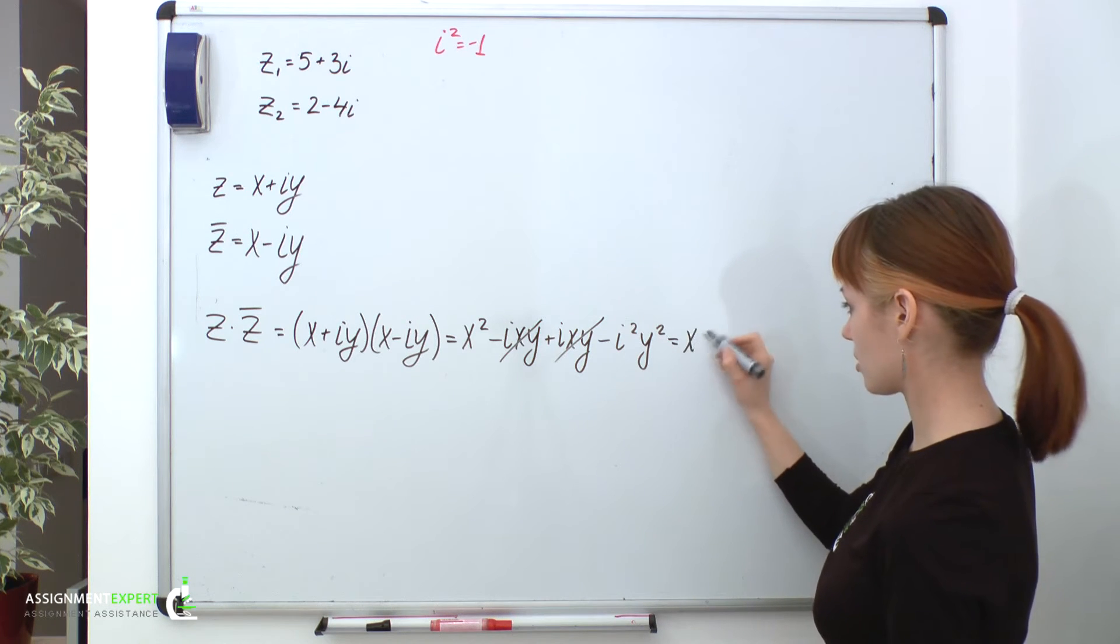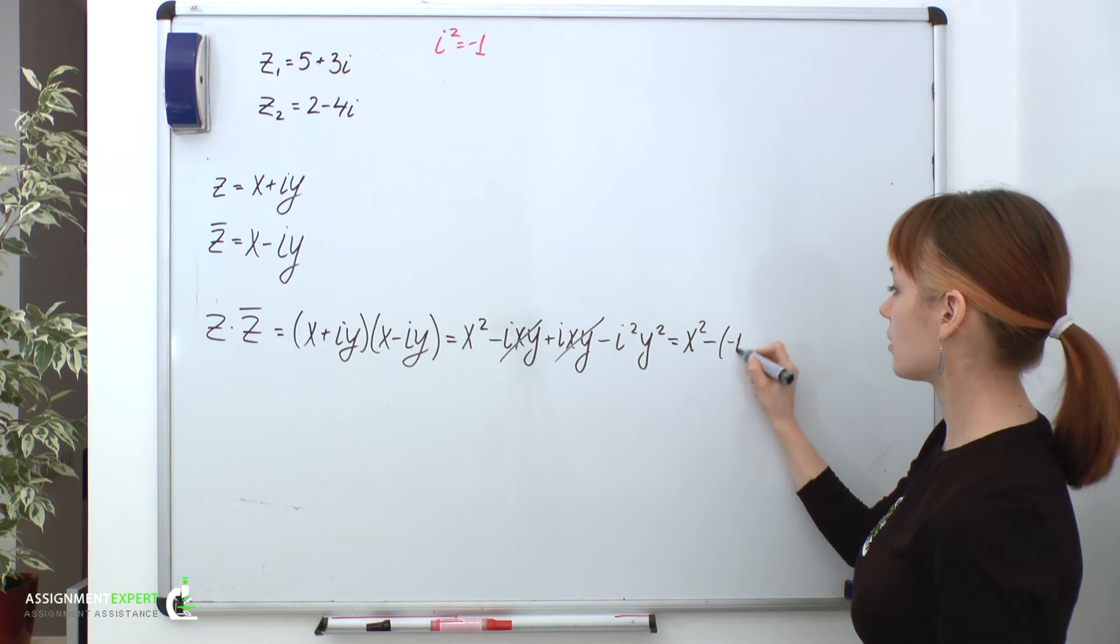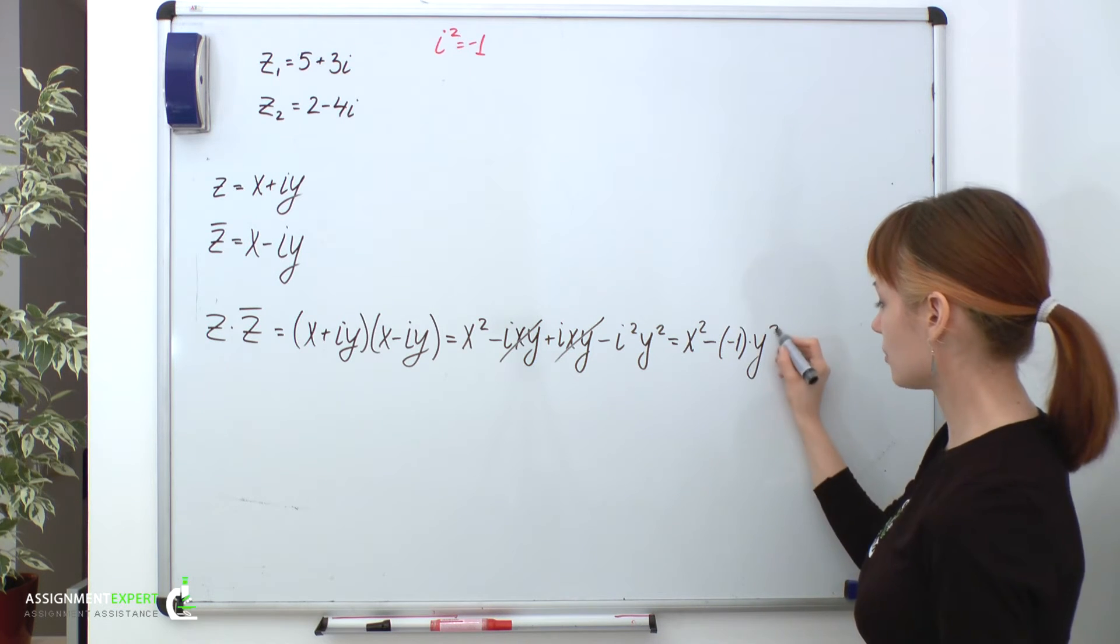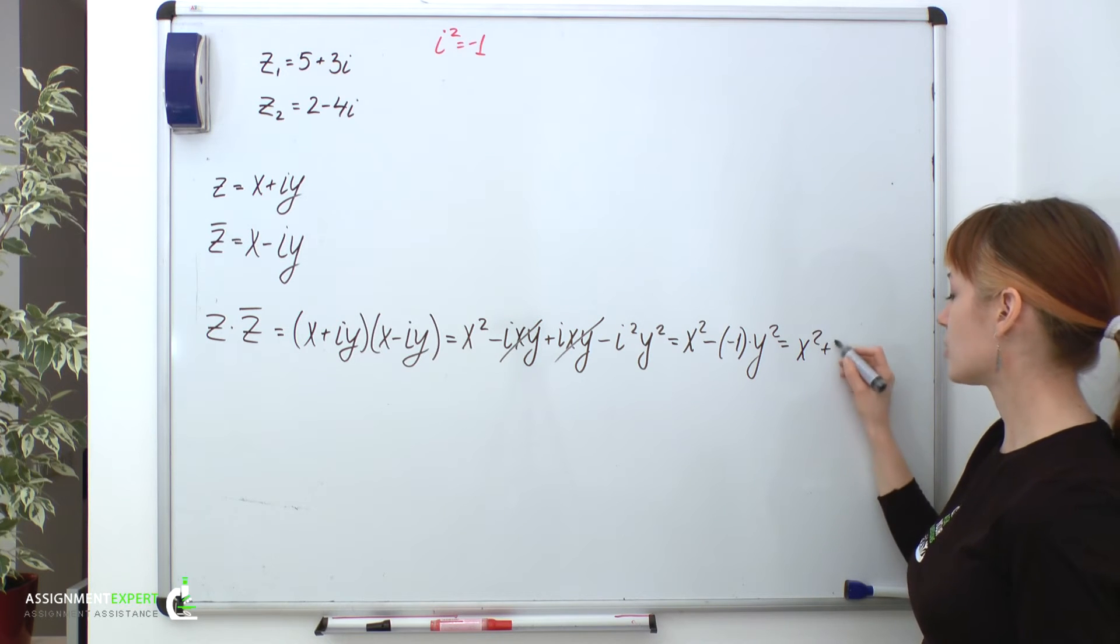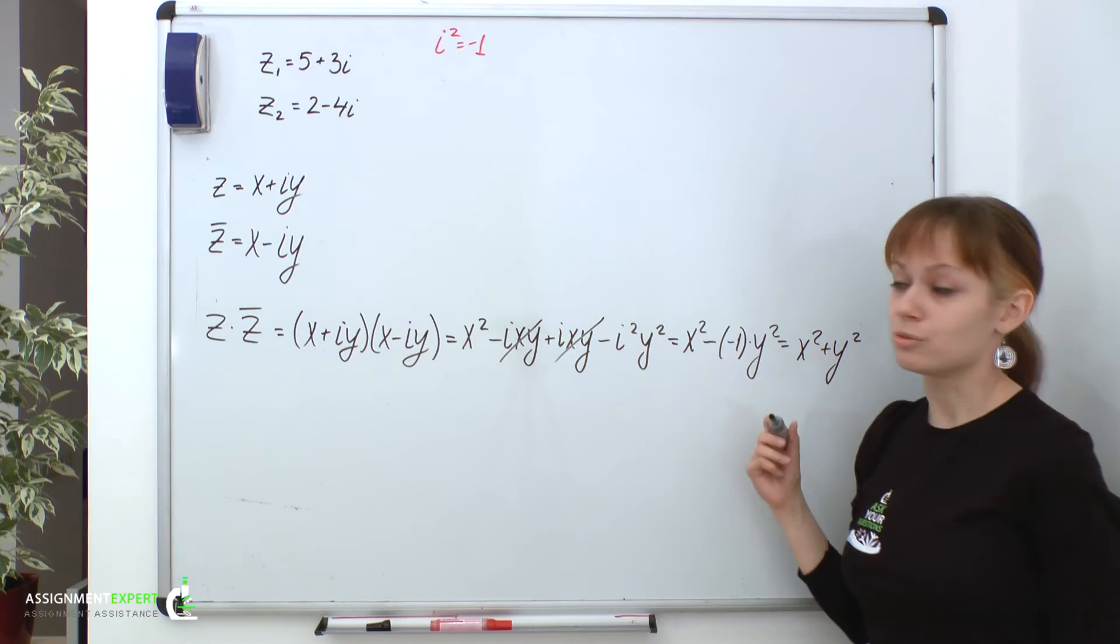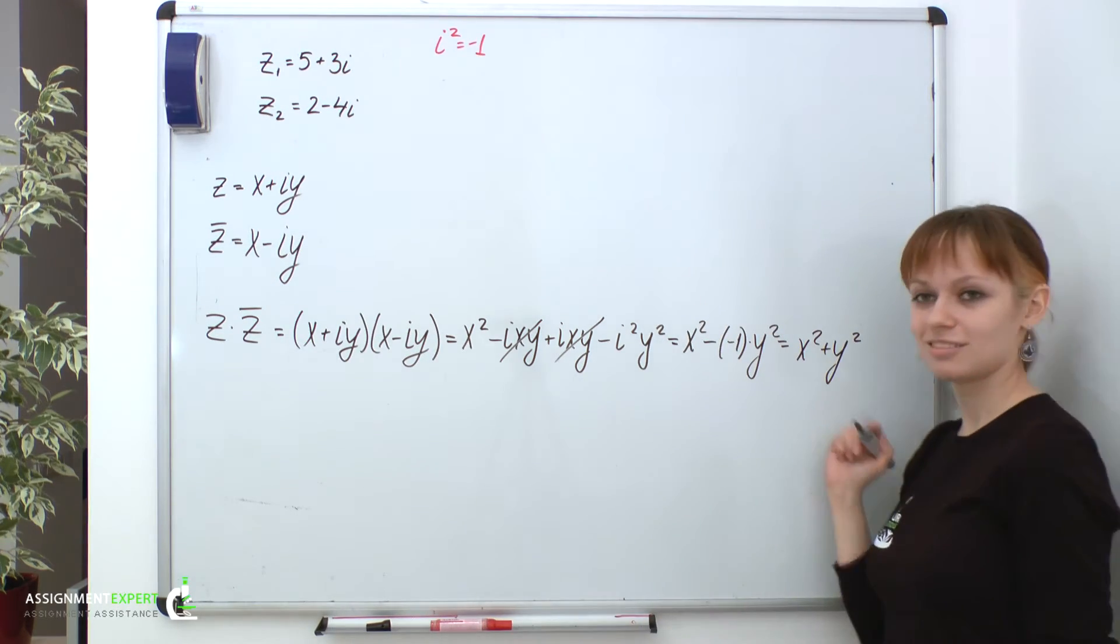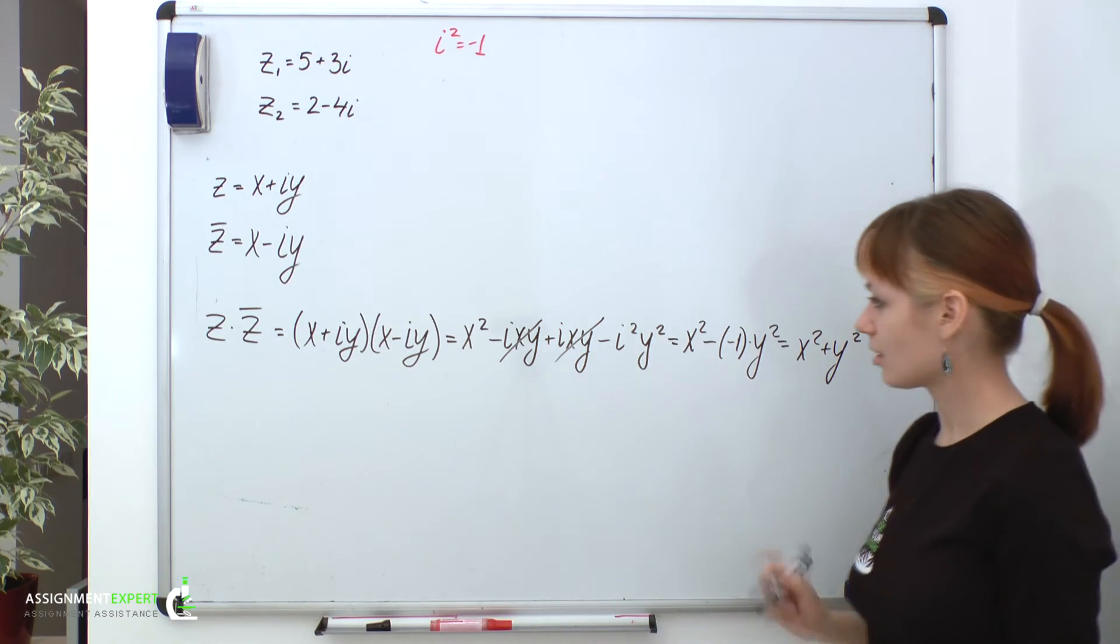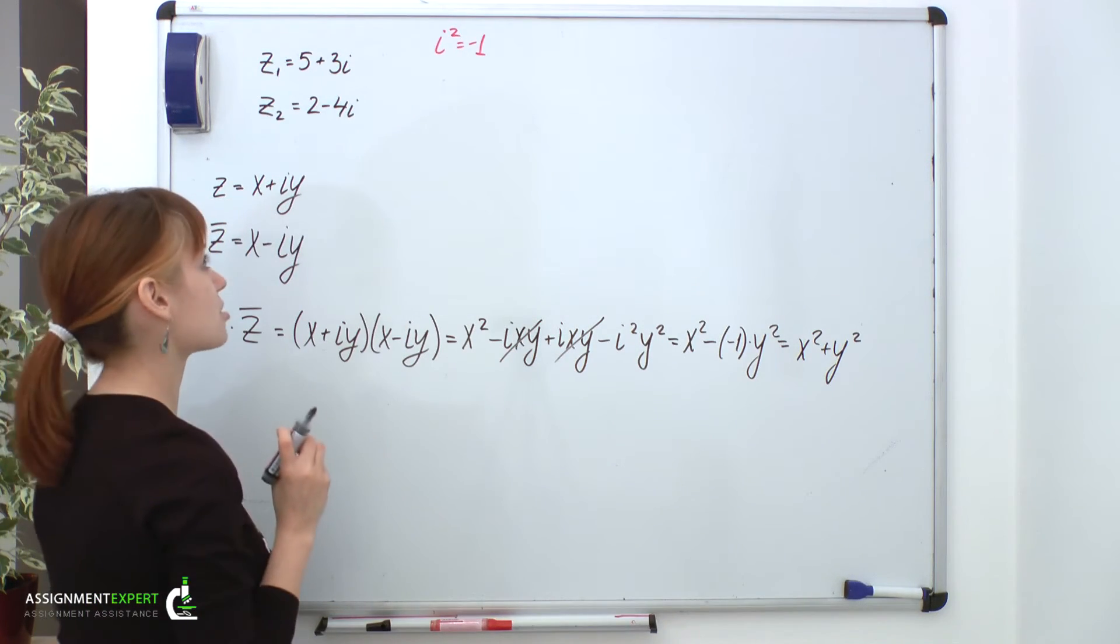i squared equals negative one. So, this brings us to x squared minus negative one times y squared, which obviously equals x squared plus y squared. So, we have shown that product of two complex conjugates is indeed a real number. And that's an important piece of information and I should probably have it written down separately somewhere.